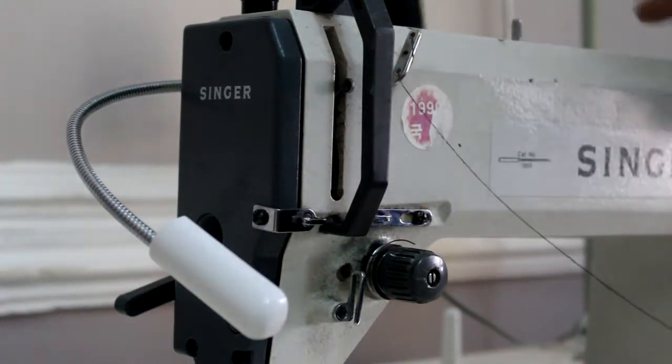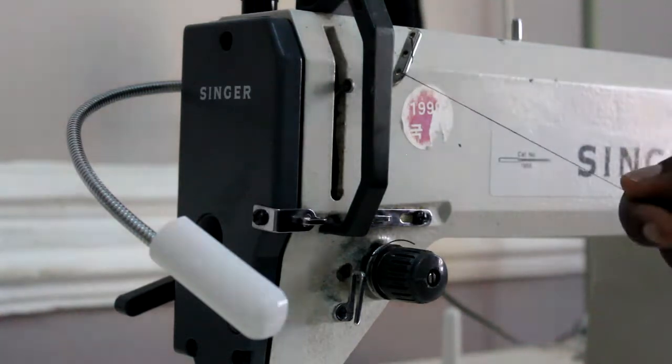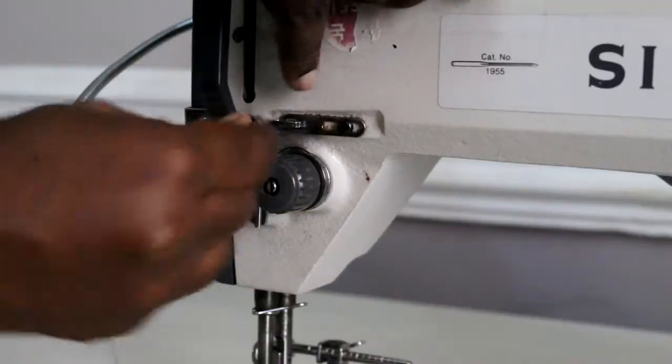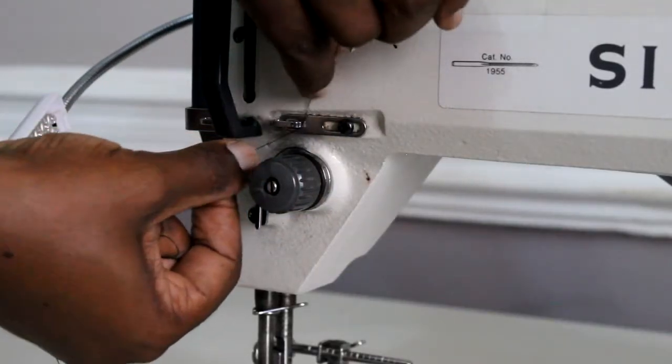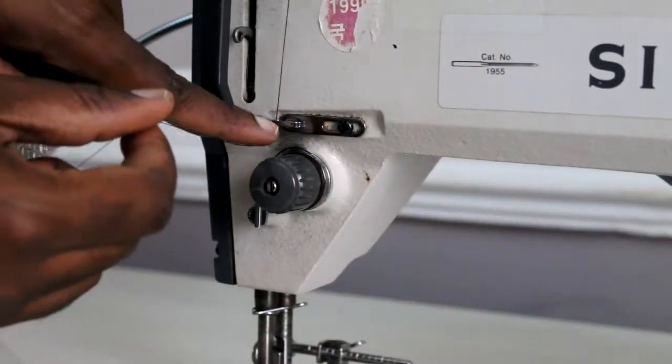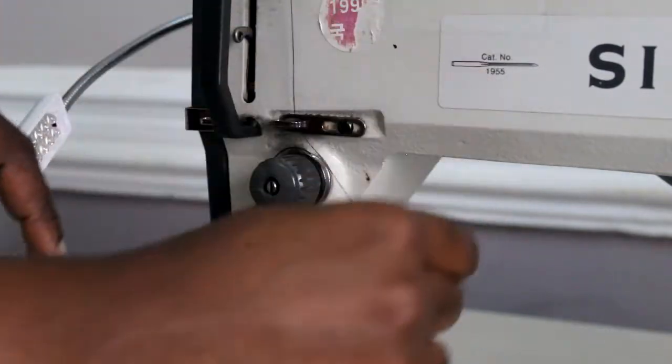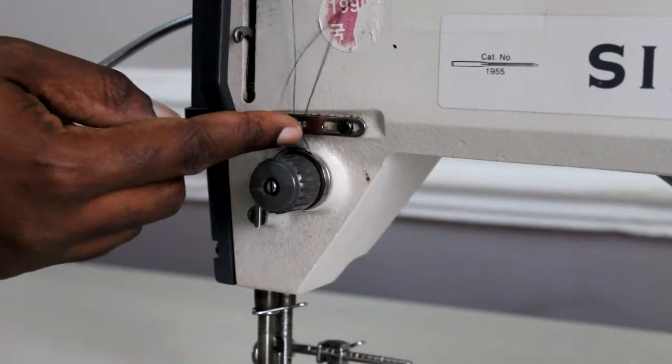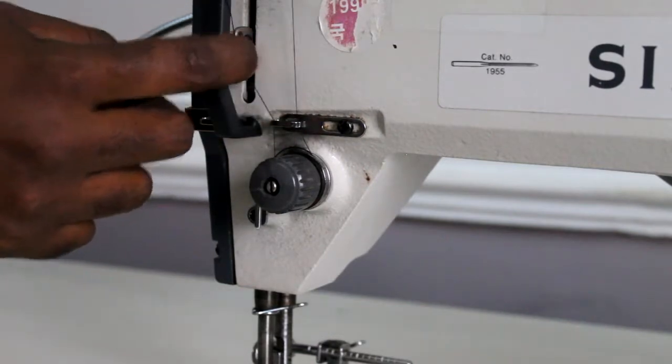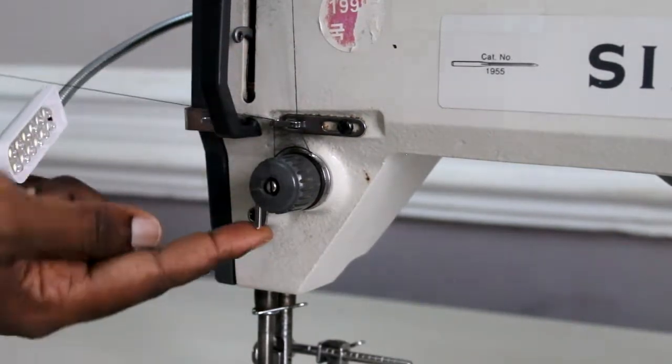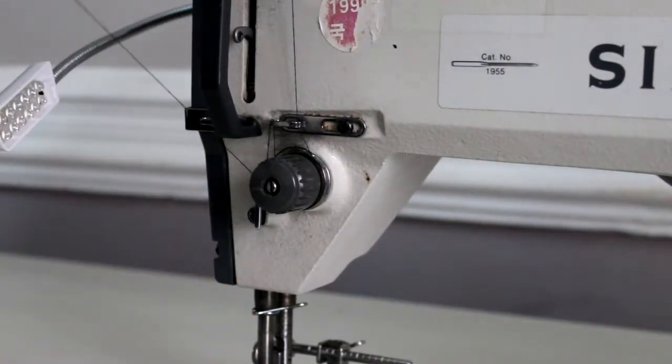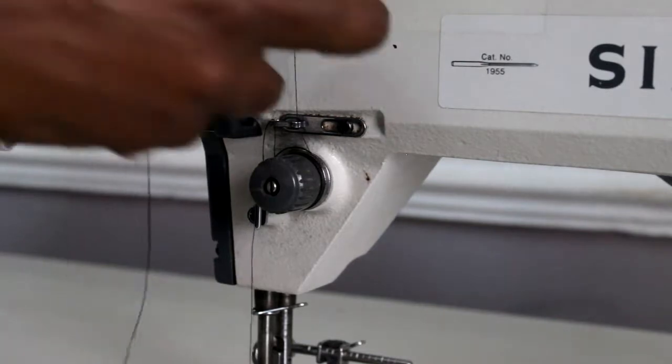Next we go down to the side, pass it around that thread guide. Go around the tension knob. Make sure you go between the tension disc. Now take it back, bring it down again around that hook. And now we'll take it back through the thread take-up lever. There's a hole there, pass it through, and back down again.